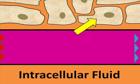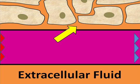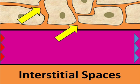Intracellular fluid is fluid that is found within cell bodies. Extracellular fluid is a general term for fluid that is found anywhere outside of a cell body. The spaces in between cells are called interstitial spaces and are filled with interstitial fluid.